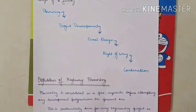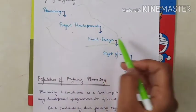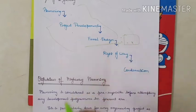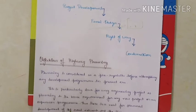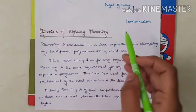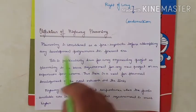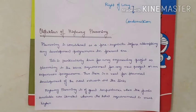When people work together in these three stages, the final output will be more effective. The objectives of highway planning: planning is considered a prerequisite before attempting any development program. Before going for the actual work, we plan what to do, how to do it, and what the processes are.